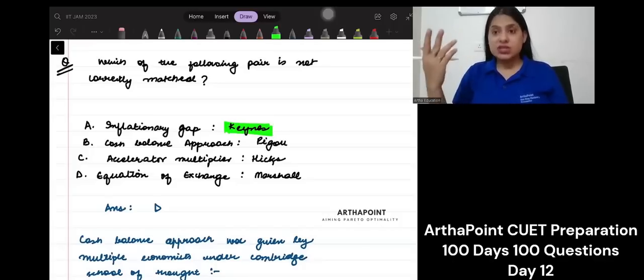Why the role of government is important. So, the concept of inflationary gap was given by Keynes.